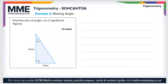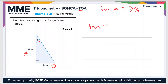Moving on to a second example. This time we're trying to find the angle rather than a missing side length. Find the size of angle z to two significant figures. Let's identify what sides we have. The side of length 5 is opposite the angle z, so that's the opposite side. And the other side is alongside it, so that's the adjacent. Since we have the opposite and the adjacent, it's the TOA part of SOHCAHTOA that we need. So tan x equals opposite over adjacent. In this case, we can rewrite it as tan z equals 5, because that's the opposite side, divided by 8, which is the adjacent side.